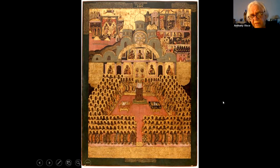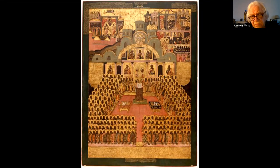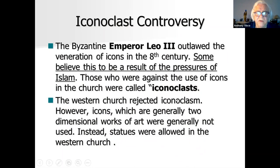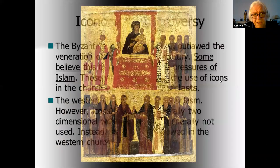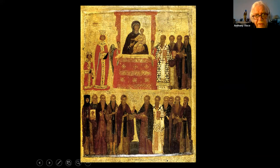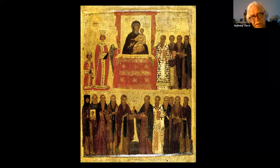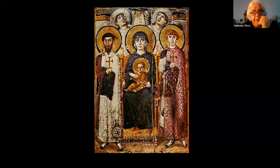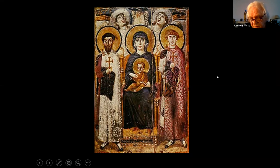The East was more simple — no perspective, gold leaf. The West made a different choice and said we're not going to stay two-dimensional; we're going to go three-dimensional as well. We went through another hundred years of iconoclasm after Leo the Third, until Empress Theodora placed an icon of the Theotokos on her dying husband's chest, and he was cured. This became celebrated in the East and gave permission to do these icons.